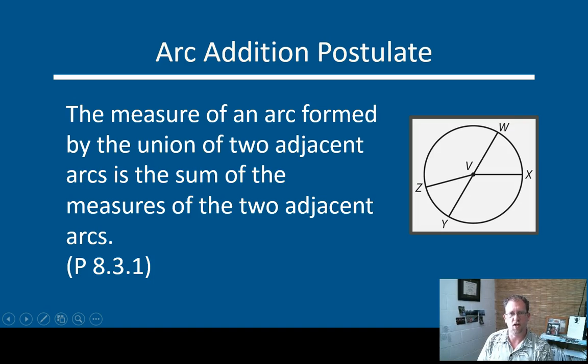We've had lots of kinds of addition in geometry. We've had segment addition and angle addition. We've had area addition and now arc addition. That the measure of an arc formed by the union of two adjacent arcs is the sum of the measure of the two adjacent arcs. If you have two small arcs and you add them together, the big arc that you get is the same measure as the sum of the two.